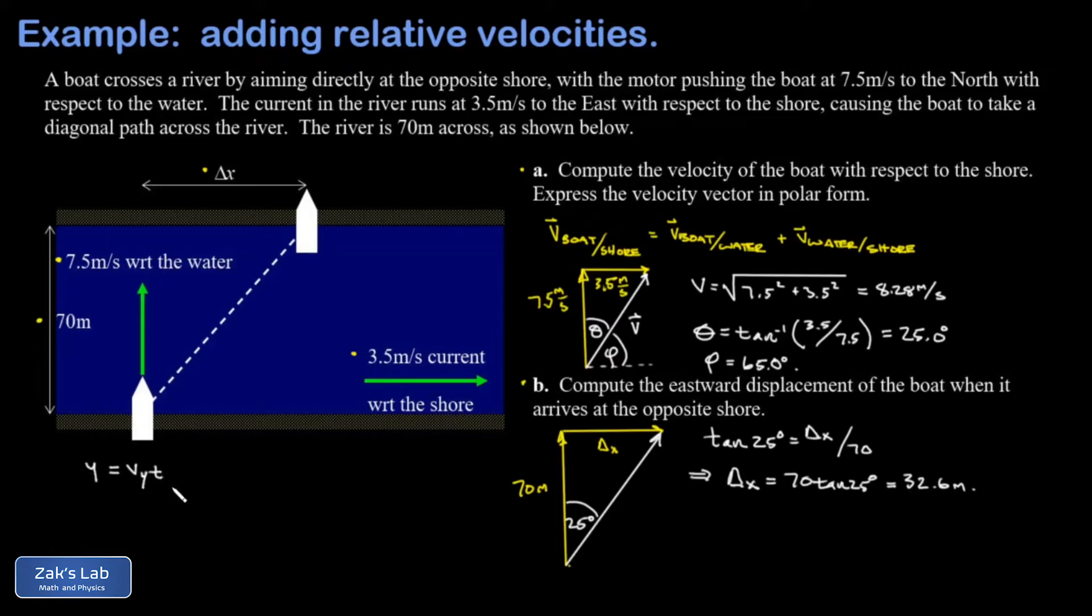So I'm going to write y equals vy times t. That means the time to cross the river is y over vy. It covered 70 meters in that y direction at a speed of 7.5 meters per second in that y direction, and this gives me a crossing time of 9.33 seconds.